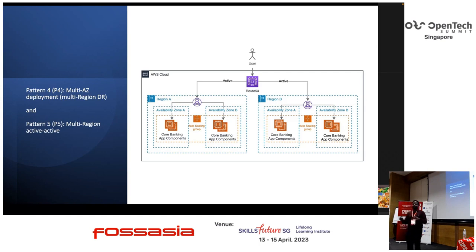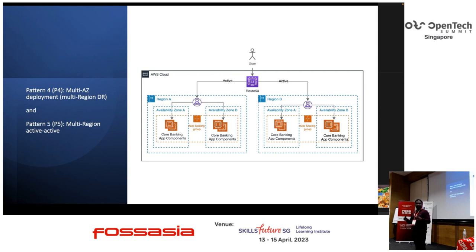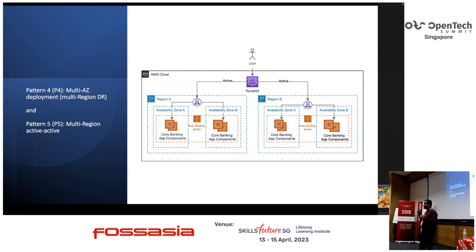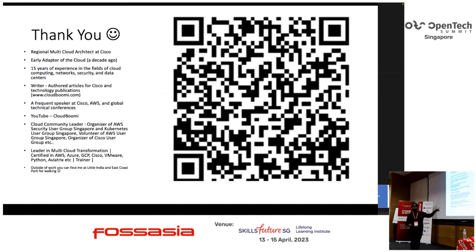You've seen how we scale step by step — from one availability zone, one data center, one instance, to compute instances, then cloud-native, and finally multiple regions. That is how we scale things. I'll be around — if you have any questions, you can connect with me. This is my LinkedIn; you can connect and exchange questions anytime.